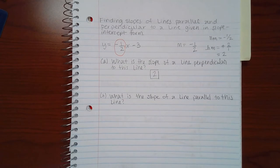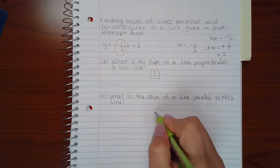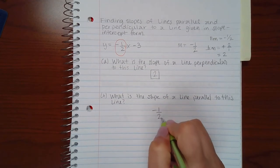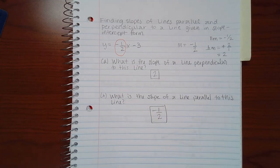What is the slope of the line parallel to this line? That slope would have to be exactly the same, which means it would also have to be negative one-half.